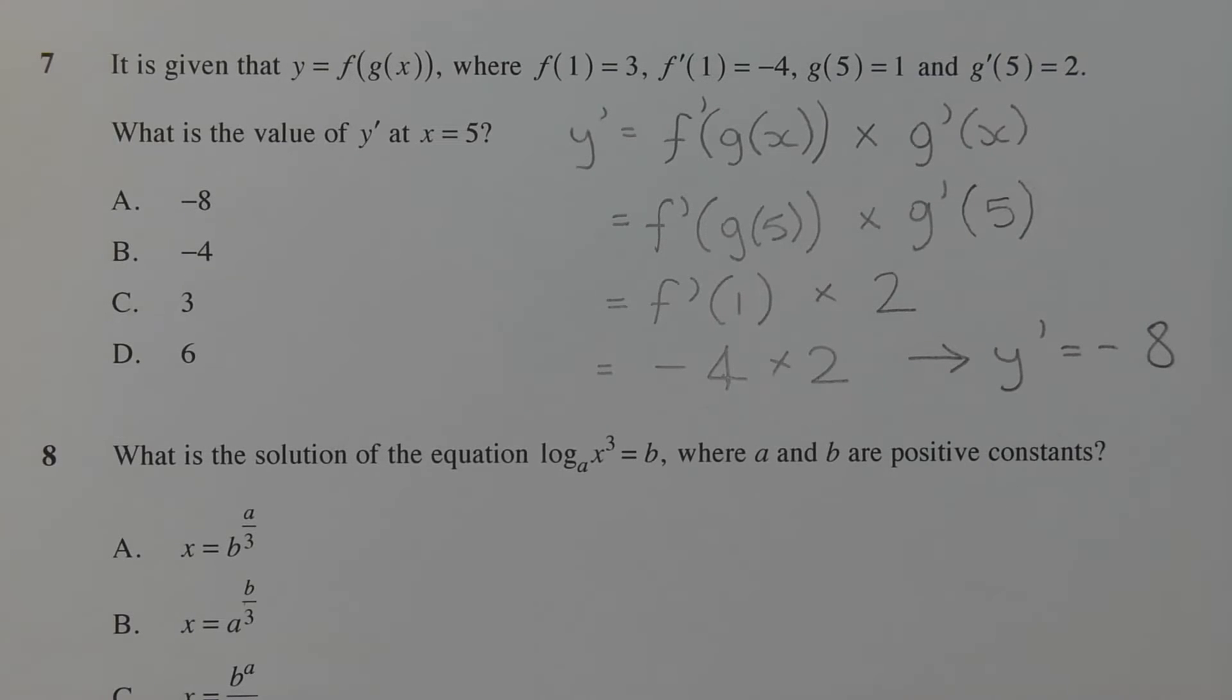Now by definition, g of 5 is equal to 1, so I'm going to substitute 1 for g of 5 here, and g dash of 5 is equal to 2. So I'm going to replace this with 2.